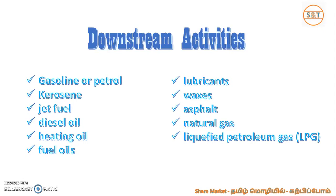Downstream products include gasoline, petrol, kerosene, jet fuel, diesel fuel, heating fuel, lubricants, and waxing. We focus on the crude oil and its materials. We use lubrication, natural gas, liquid petroleum gas (LPG), petrol, and kerosene. We use all these materials.